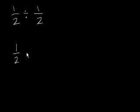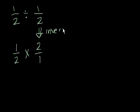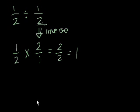If I were to ask you 1 half divided by 1 half, whenever you divide by a fraction, or actually when you divide by any number, it's the same thing as multiplying by its inverse. So 1 half divided by 1 half is equal to 1 half times 2 over 1. We just inverted the second 1 half. And we know from the multiplication module, 1 half times 2 over 1, well that's just equal to 2 over 2, or it's equal to 1.